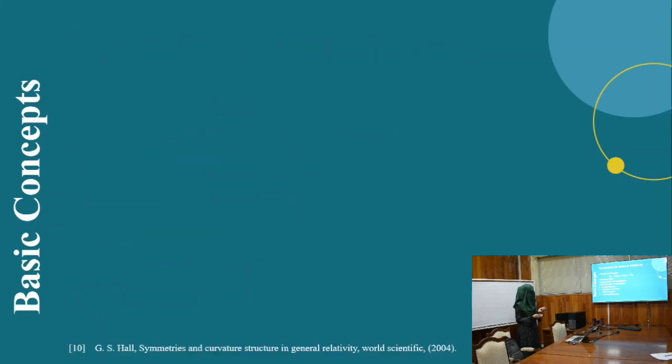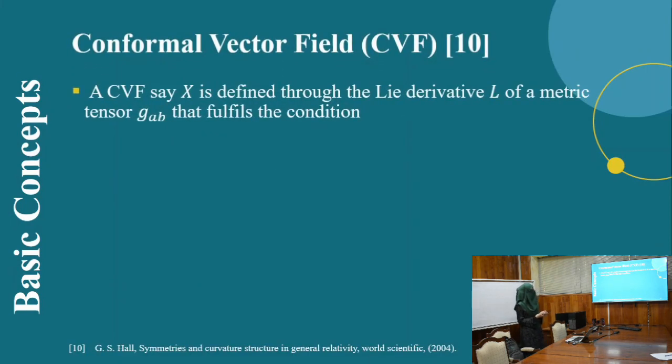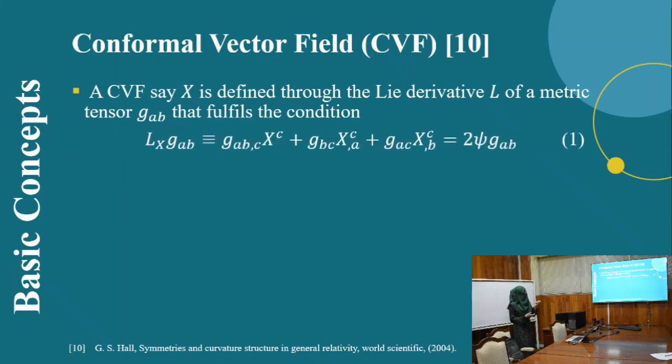Any vector field X is said to be a conformal vector field if it satisfies equation number 1, where this function ψ is a smooth conformal function.